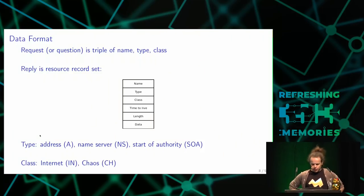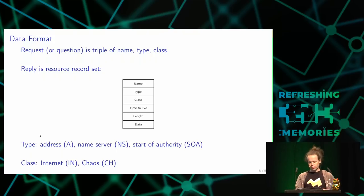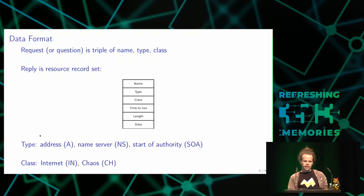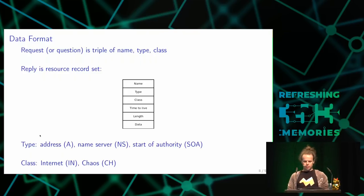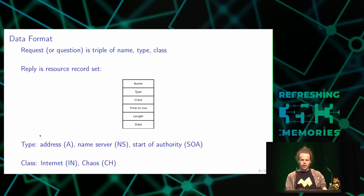The data format on the wire involves requests where your client or resolver asks a service. The request is a triple of a name, a record type, and a class. The reply contains the same information — name, type, and class — but additionally includes a time-to-live, a length, and a data field. The data field is interpreted differently depending on the type. The time-to-live field specifies an amount of seconds for how long this resource record may be cached.